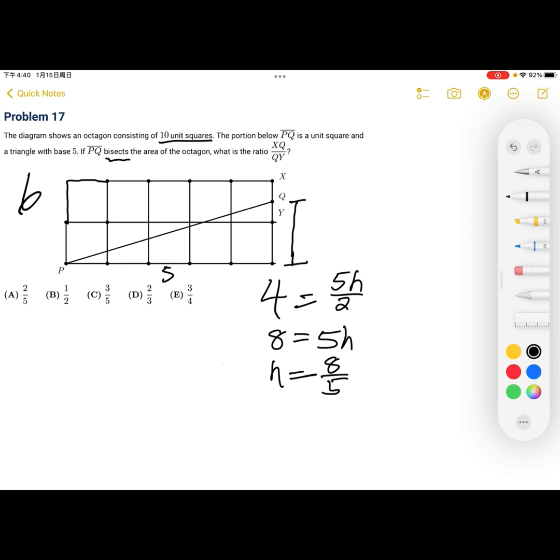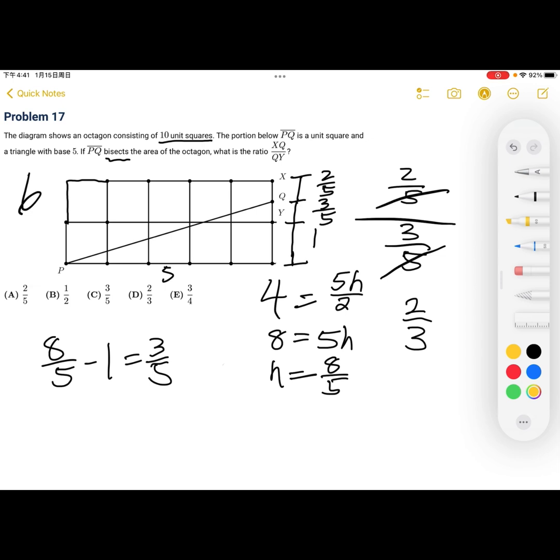So, that means if we want to find the length of QY, all we have to do is subtract the unit square, which is equal to 1. So, 8 fifths minus 1 is equal to 3 fifths. So, this QY is equal to 3 fifths. If QY is equal to 3 fifths, that means XQ is equal to 2 fifths. And then we want the ratio of XQ to QY, which is 2 fifths all over 3 fifths. So, canceling the 5s out, we get that XQ over QY is equal to 2 thirds. Our answer is D.